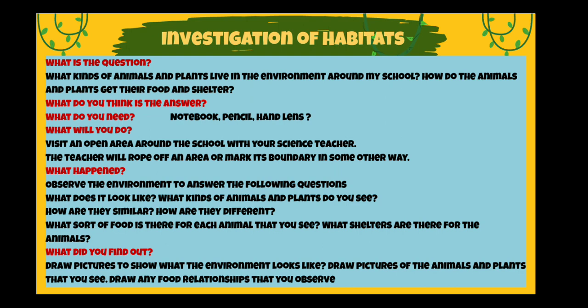What sort of food is there for each animal that you see, and what shelters are there for the animals? In the end, write what you found out. Draw pictures to show what the environment looks like, or you can capture pictures with a mobile or camera. Draw pictures of the animals and plants that you see, and draw any food relationships that you observe.